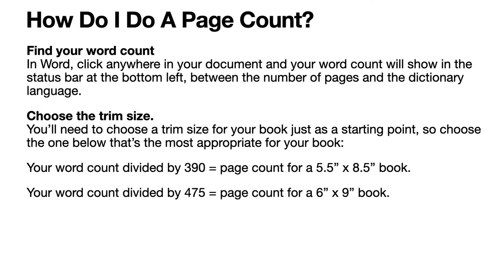First, find your word count. In Word, click anywhere in your document and your word count will show in the status bar at the bottom left — though in different versions it may be in different places. Choose your trim size: we've got 8x5 or B format, but the example used here is 5.5x8.5. Your word count divided by 475 or 390 gives the number of pages for a 6x9 or a 5.5x8.5 book.